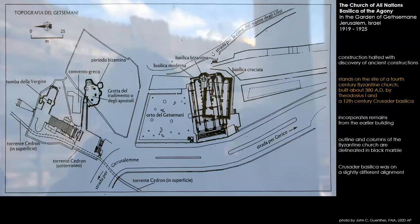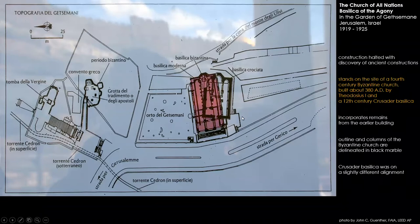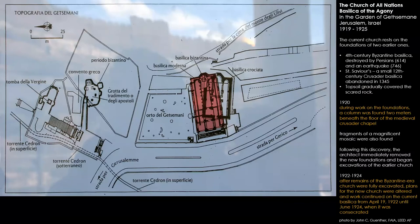This map outside the entrance to the Basilica shows that several other religious structures were built on that same site. It stands on the site of a fourth-century Byzantine church from 380 AD and also a 12th-century Crusader Basilica. Barluzzi's design is shown in red. In building on these ancient sites, the archaeology needs to be investigated — in 1920, during work on the foundations, they found a column about two meters beneath the floor of the medieval Crusader church, so they stopped work and did more excavation. In 1922 to 1924, after the remains of the Byzantine era church were fully excavated, Barluzzi created new plans and proceeded with construction of the final Basilica we see today.